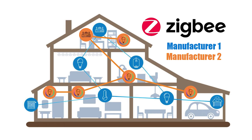Further complicating things, if you have Zigbee devices from multiple manufacturers in your smart home, they might not be able to communicate with each other, meaning they may need to form separate mesh networks, which can actually interfere with each other causing dropped or lost signals.